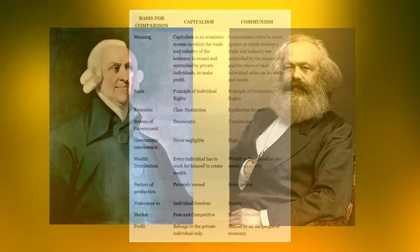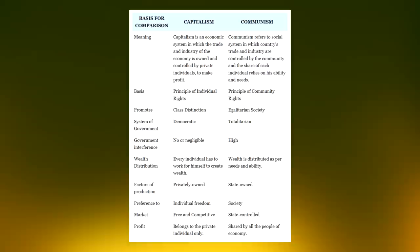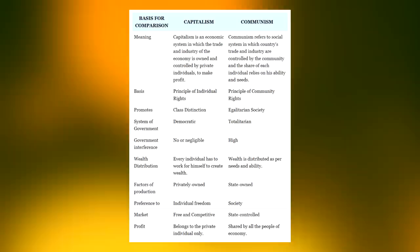In case you do not know, the capitalist ideas of Smith and the communist ideas of Marx are often painted as diametrically opposed to one another. Adam Smith, The Wealth of Nations, and Capitalism are seen as symbols of freedom and liberty, whereas Karl Marx, The Communist Manifesto, and Communism are seen as symbols of totalitarianism and government control.